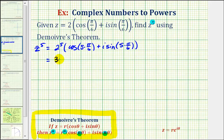Well, two to the fifth is equal to 32, and we'll have cosine of five pi over six plus i sine five pi over six.